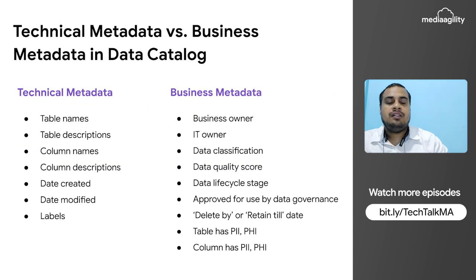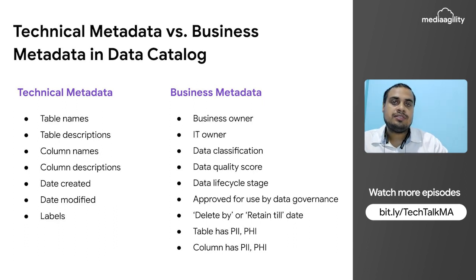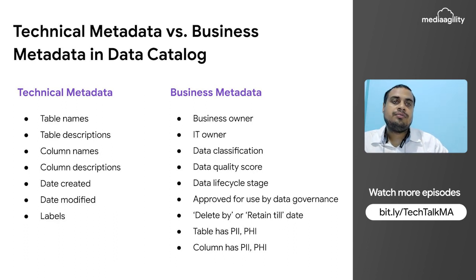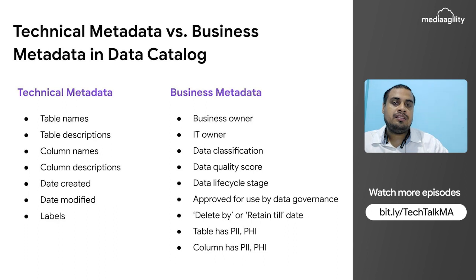The last part is technical metadata versus business metadata in the data catalog. In technical metadata we have table names, table description, column names, column description, date created, date modified, and labels. In business metadata we have business owner, IT owner, data classification, data quality score, data life cycle, data life cycle stages, approved-for-use designations, delete-by or retain-till dates, and whether a table or column has PII or PHI information.